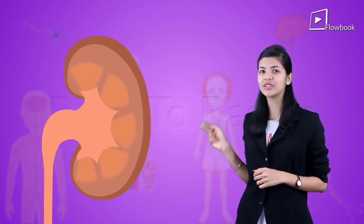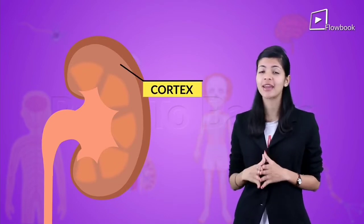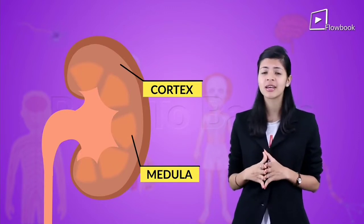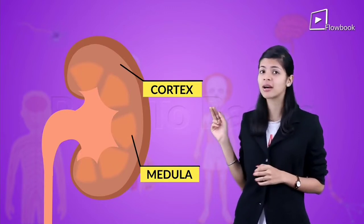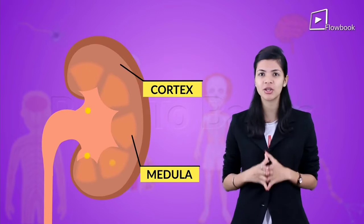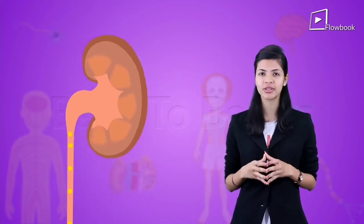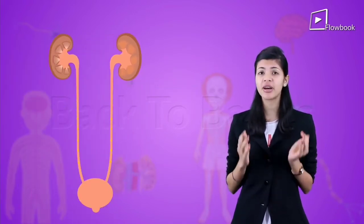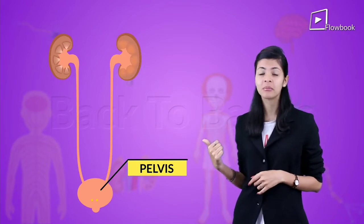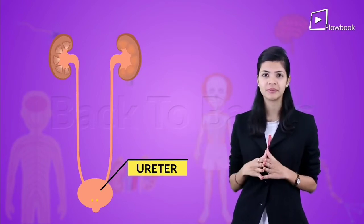It has an outer region called the cortex and an inner region called the medulla. The cortex is darker comparatively to the medulla. This medulla drains the urine into a funnel-shaped structure called the pelvis, which continues to become a ureter.